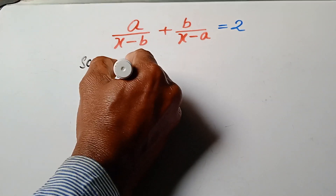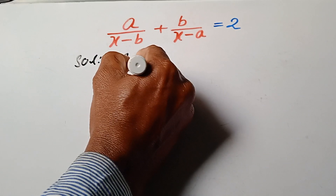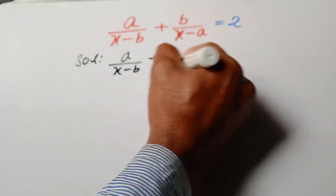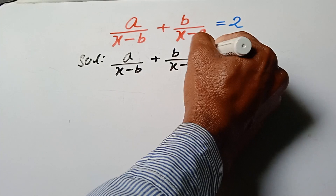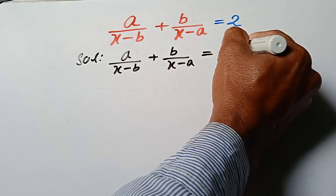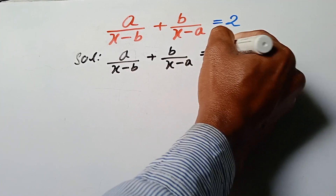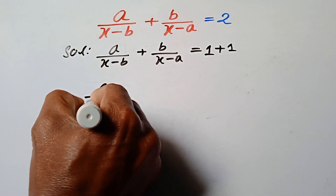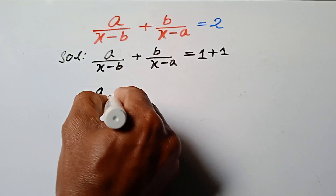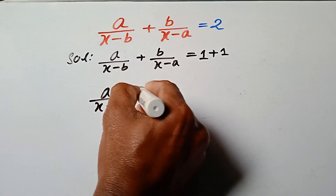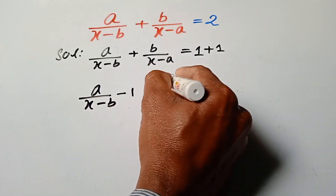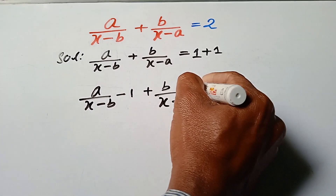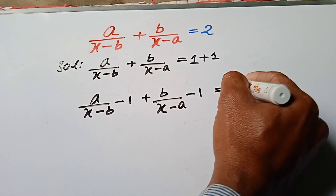a over x minus b plus b over x minus a is equal to 2. We can write this as 1 plus 1. Then a over x minus b minus 1 plus b over x minus a minus 1 is equal to 0.